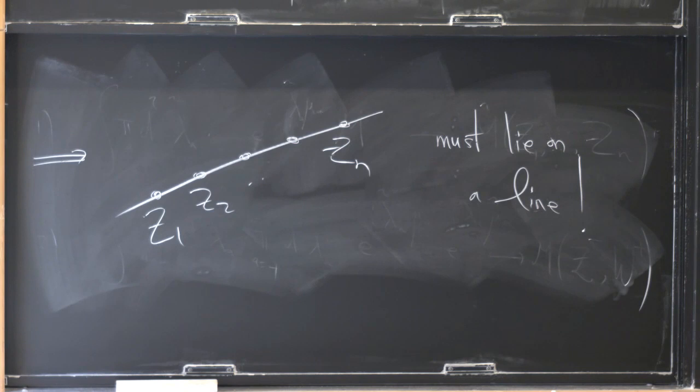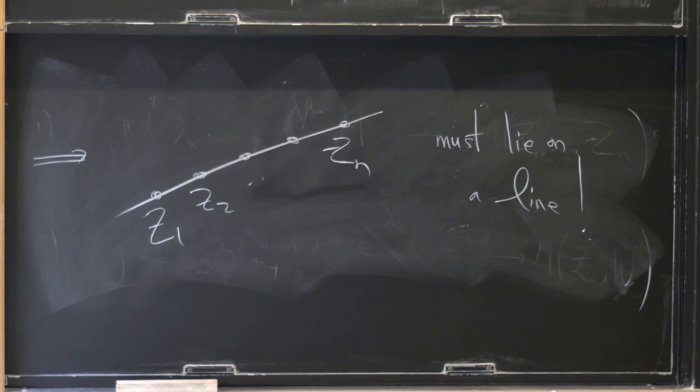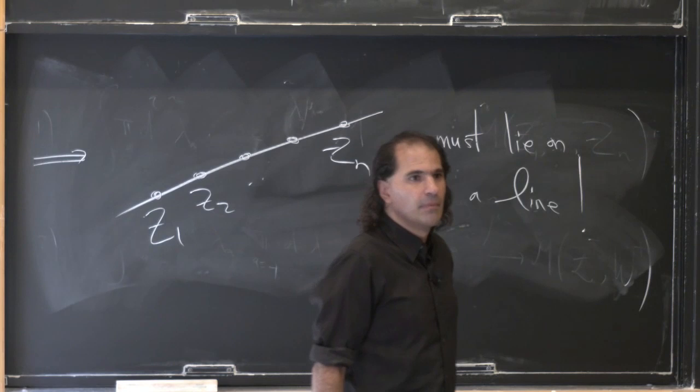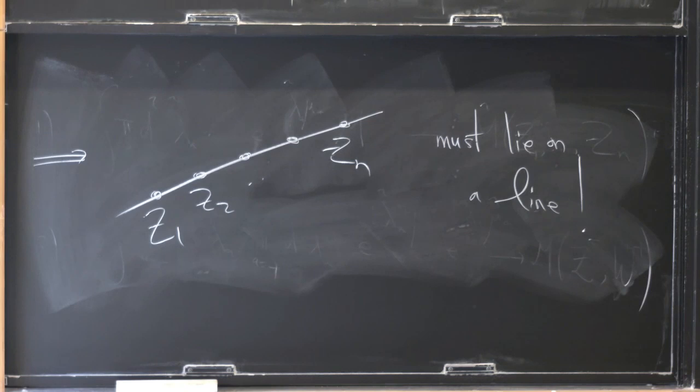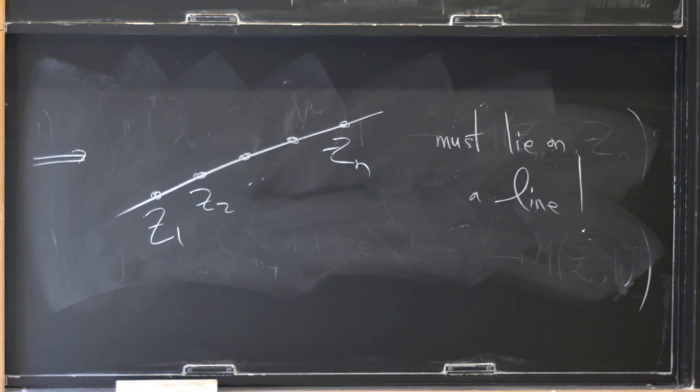And that was all the hints that Witten needed to — within six months of hard work — generalize that to: amplitudes in general should be supported on degree-k curves. If we go beyond Park-Taylor amplitudes to more complicated amplitudes, the simplest ones are supported on lines. In general, they're supported on quadratics, cubics, higher degree curves. But this is the first indication that there's something interesting going on — when we go to twistor space, the amplitudes start getting this geometric quality to them that we don't see so obviously in terms of lambda and lambda-tilde.